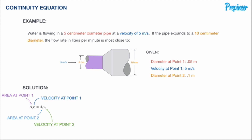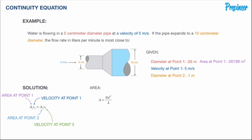We need to find the areas since they aren't directly given. Using A = πd²/4, with diameter 0.05 meters at point one, the area A1 is 0.00198 square meters. At point two with diameter 0.1 meters, the area A2 increases to 0.00785 square meters.